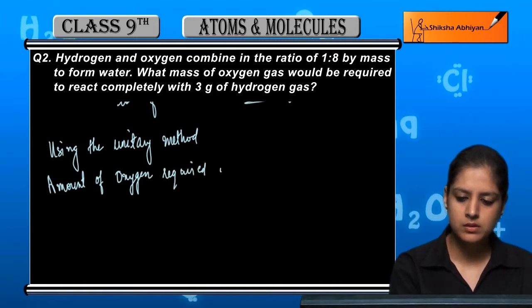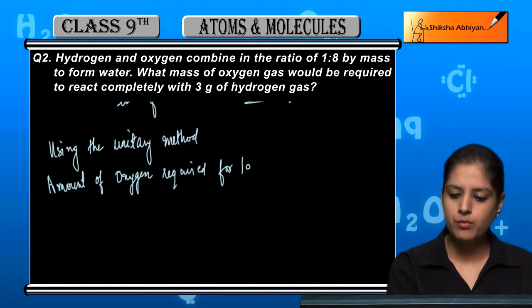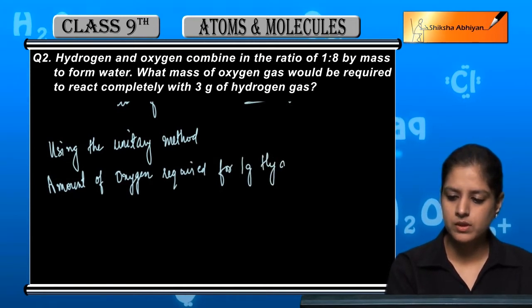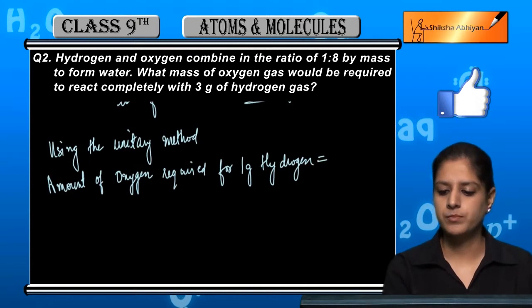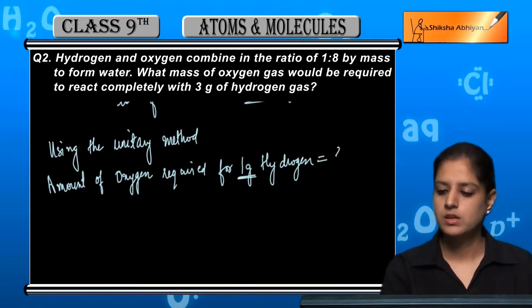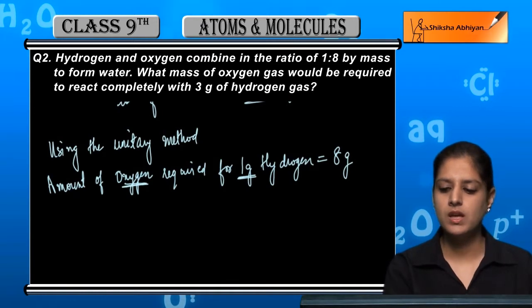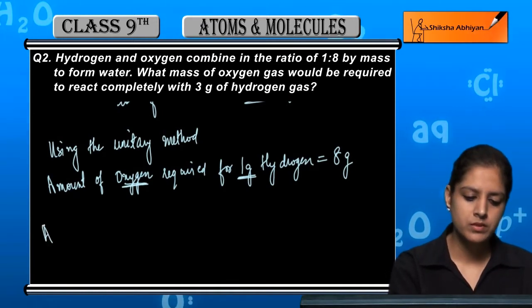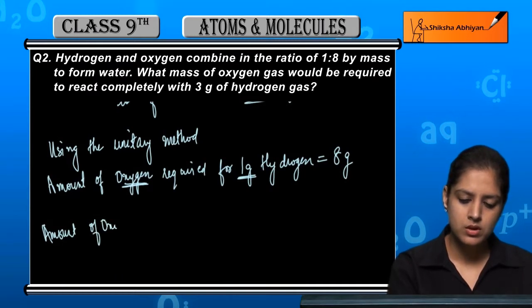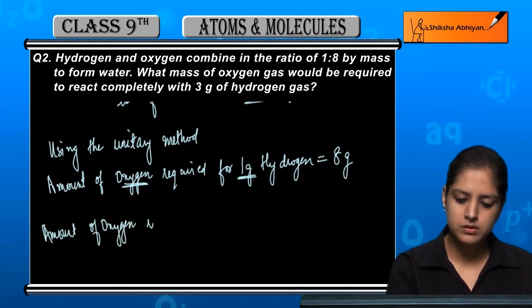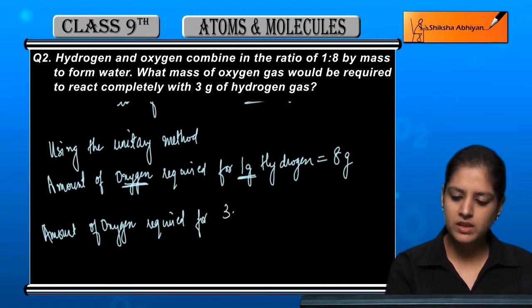For 1 gram hydrogen, the 1 is to 8 proportion means 1 gram hydrogen is to 8 gram oxygen. So if we see the amount of oxygen required for 3 gram hydrogen...